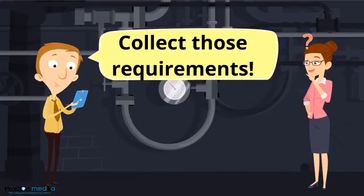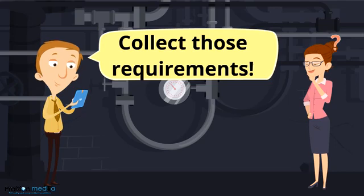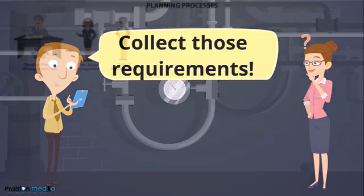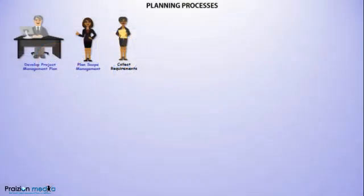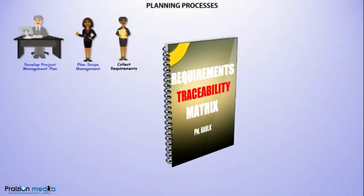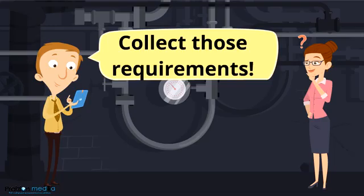The next process is Collect Requirements, where requirements are actually collected. We have a requirements traceability matrix as an output of this process, and this maps requirements to their origin. It can be a rather useful document.